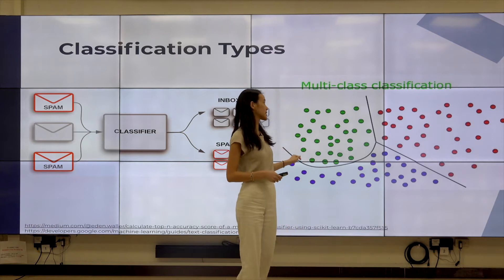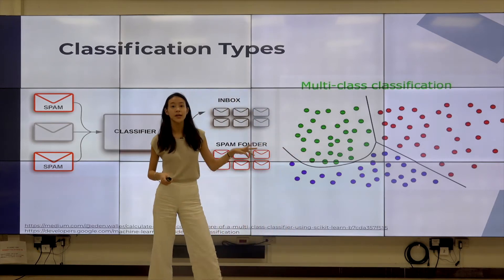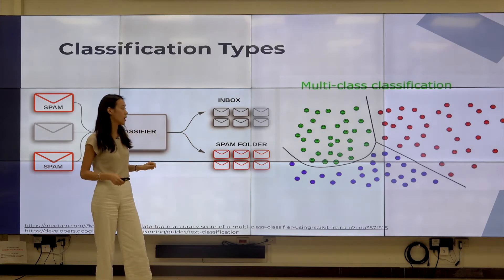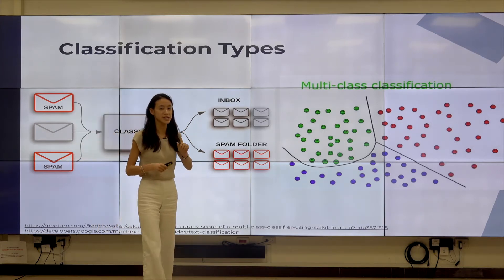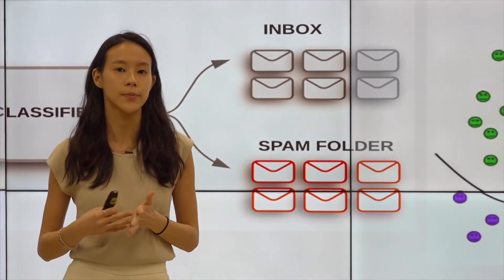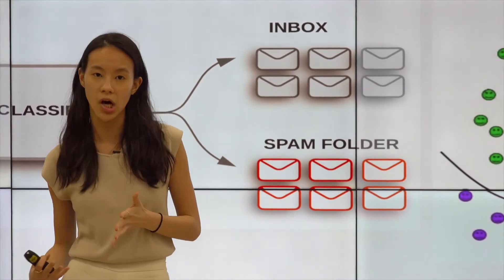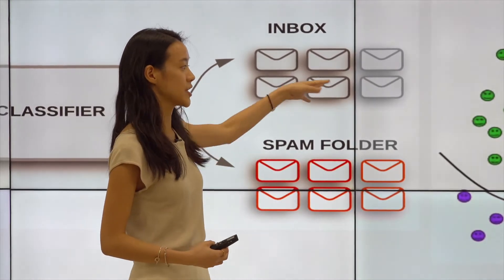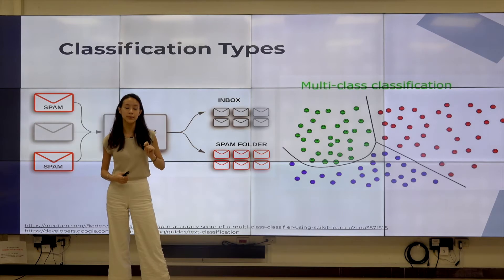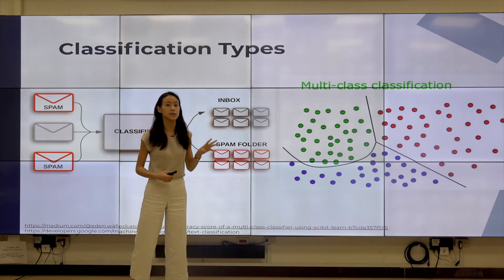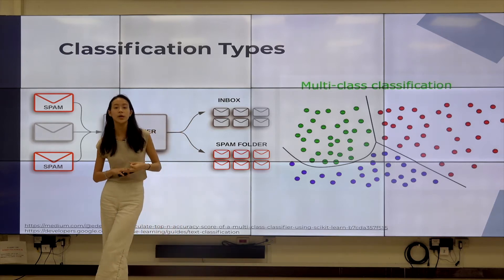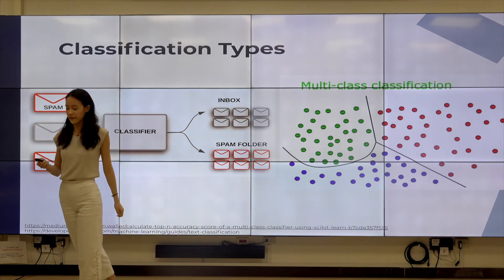The other type is multi-class classification, as we see on the left side. Multi-class classification is more complicated than a simple yes/no or 'is this a dog or not.' In multi-class classification, there are many different categories or labels that these points can potentially belong to — in this image it would be a happy face, a neutral face, or an unhappy/angry face.